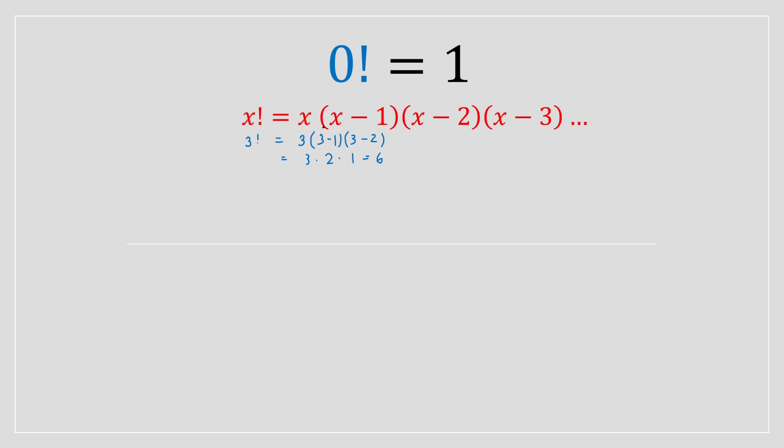Right, but we can rewrite this formula as the following. We can rewrite it as this, which is an equivalent statement to this. It basically replaces this whole section as x minus 1 factorial.